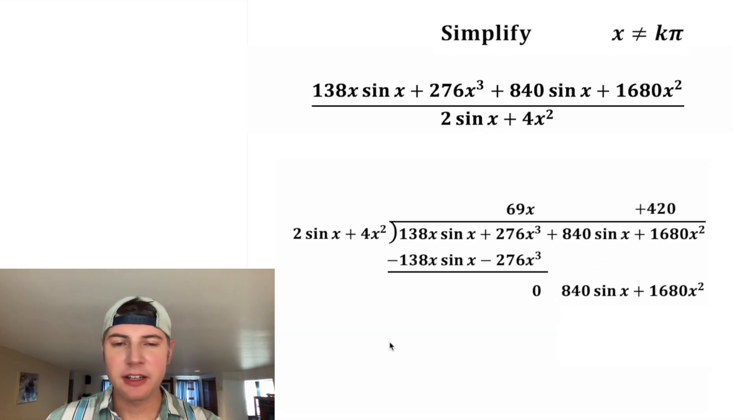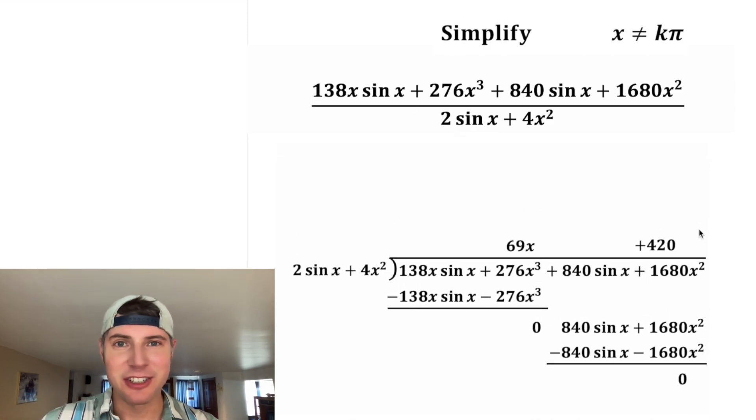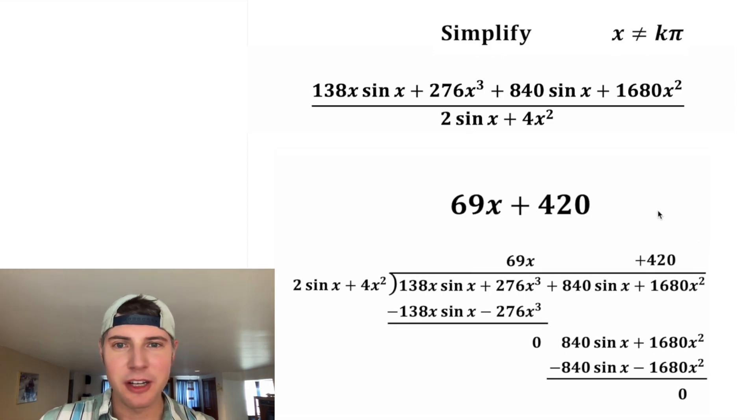420 times 2 sine x is 840 sine x. And 420 times 4x squared is 1680x squared. After we subtract these, we get another 0. We have now simplified this rational expression. And the answer is 69x plus 420. Let's put a box around it. How exciting.